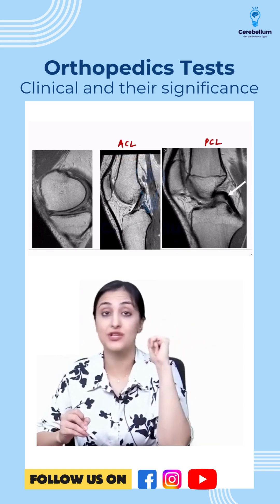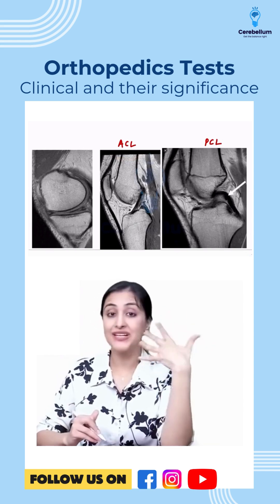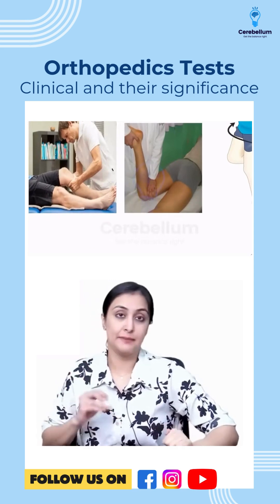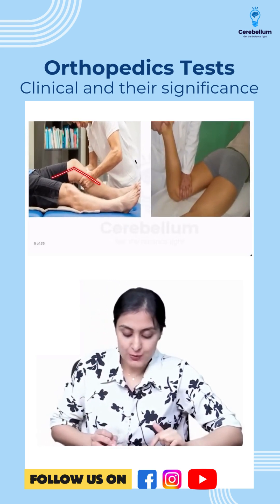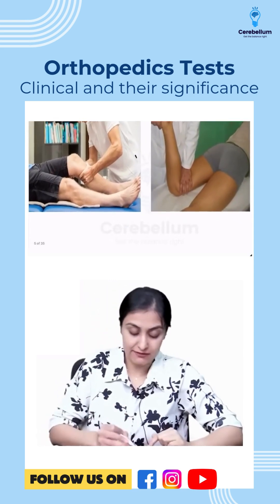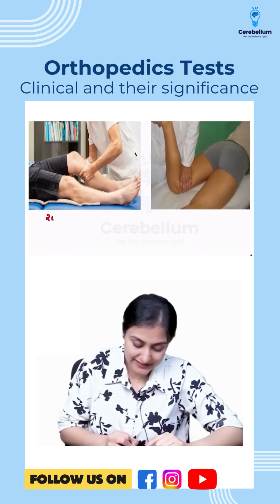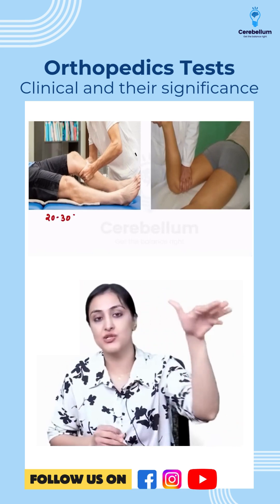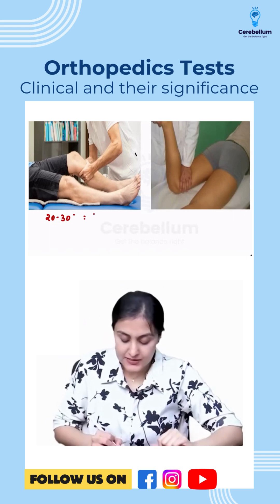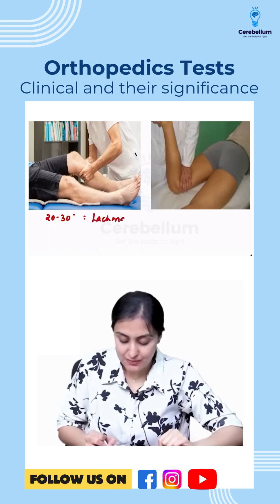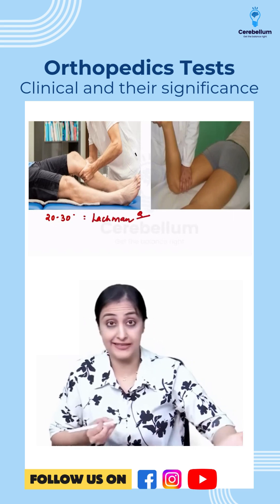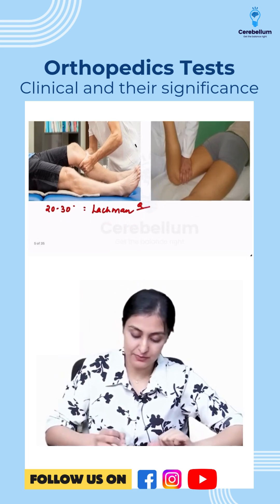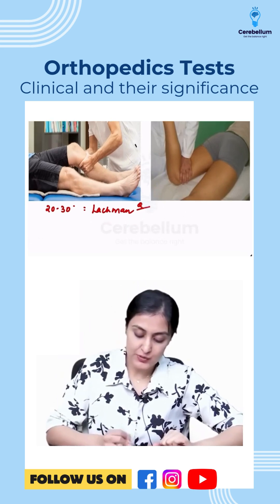Now let's do the tests for ACL and PCL. If the knee is flexed around 20 to 30 degrees — some sources say 20, some say 30 — this is what we call the Lachman test. This was asked in the last exam in 2024, so 20 to 30 degree flexion is the Lachman test. The same image as this was asked, so this is what you need to remember.